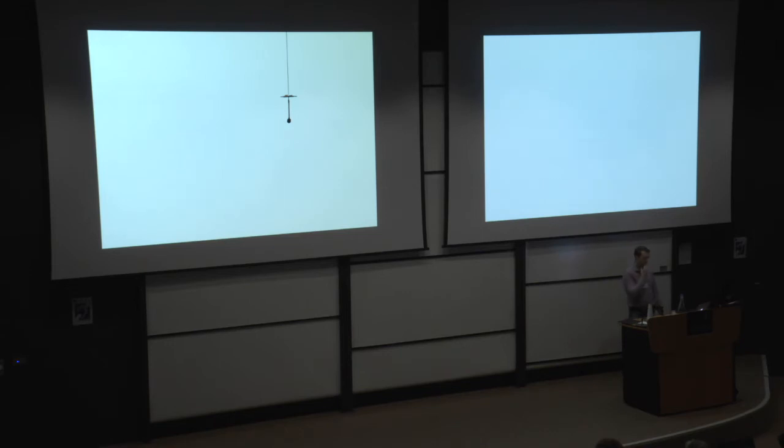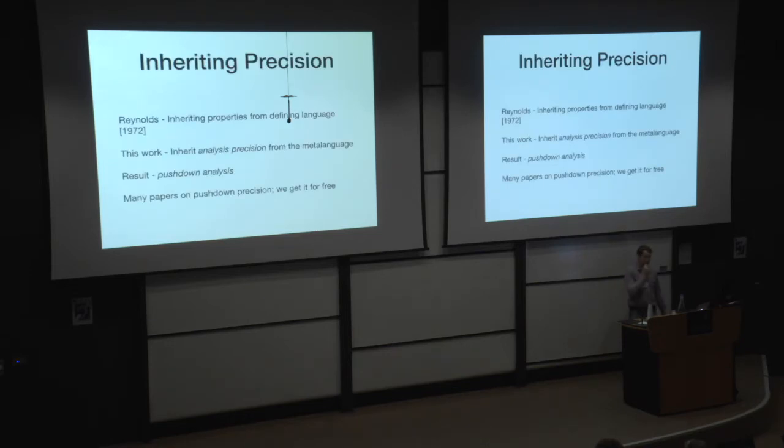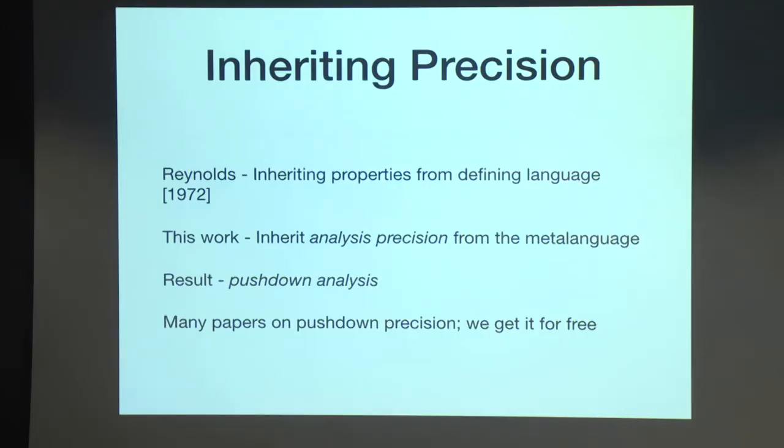So about this extra precision note. We get this extra precision through actually an observation that Reynolds made in 1972 about inheriting properties from your defining language. And in this work, we're actually going to inherit analysis precision from the defining meta-language. And the result of this is going to be a pushdown analysis completely out of the box for free, inherited.